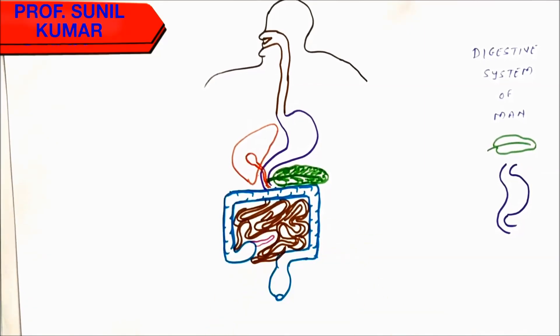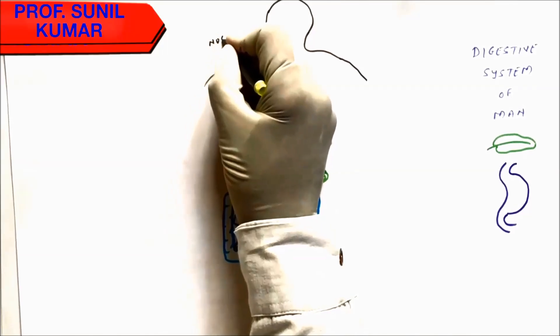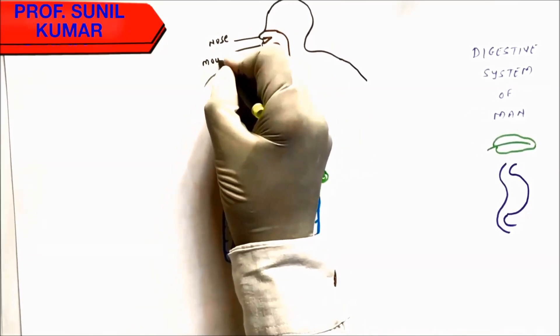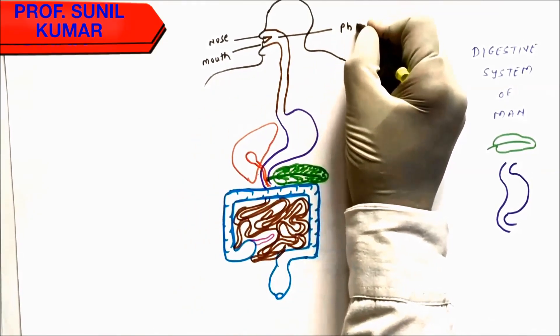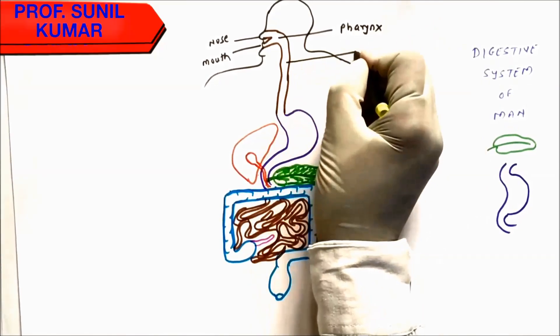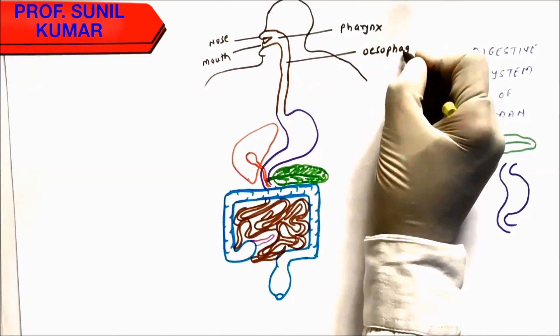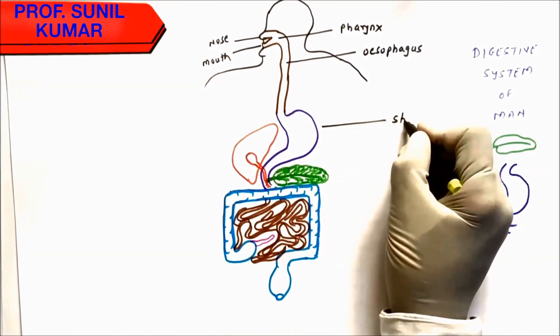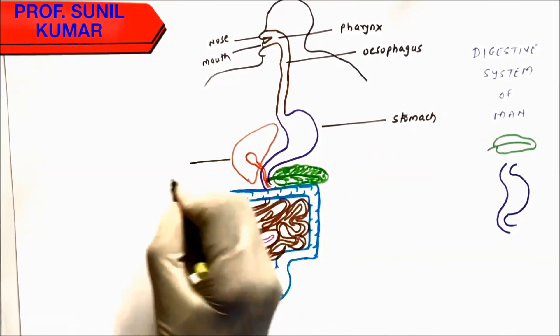Now nose, then we have mouth. Nose and mouth both are going to open at a common place that is called the pharynx. The pharynx will lead to a food pipe that is called the esophagus, which shows peristaltic movement.